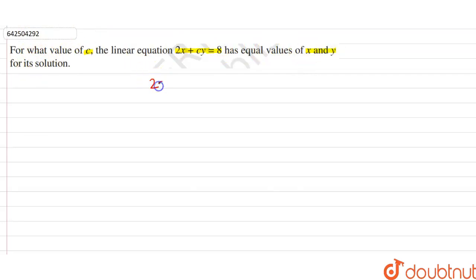In the question, the linear equation given is 2x + cy = 8. It is also given that x and y are equal, so we can say x = y.